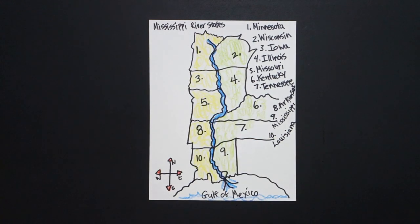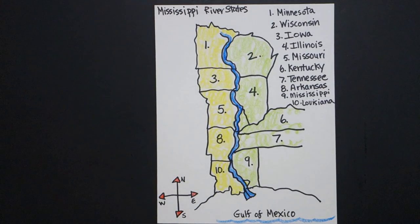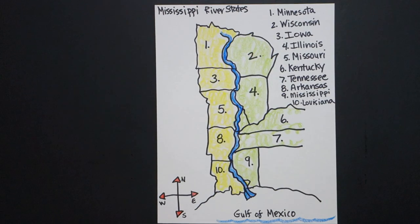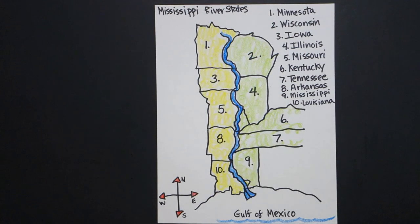Okay, I think that's all. Here are the Mississippi River states — great, super important for transportation, the westward movement, the Civil War. All kinds of things in history and the present revolve around the Mississippi River. Okay, bye-bye.